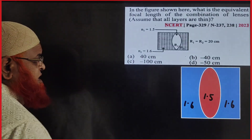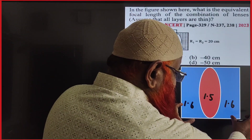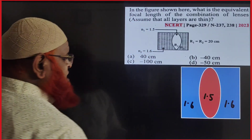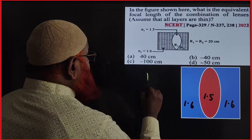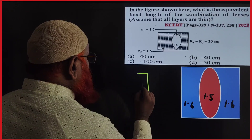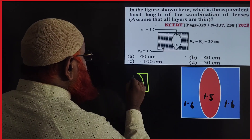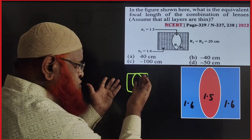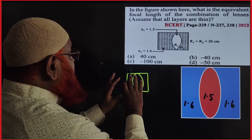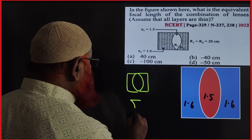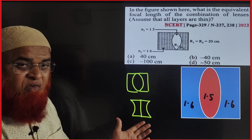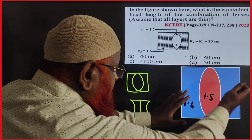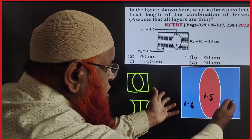Let us look at this carefully. There are two plano-concave lenses and a convex lens in the middle. There is one plano-concave lens on one side and another plano-concave lens on the other side. If I reverse them and join them together, I get a complete concave lens. The two blue-colored plano-concave lenses on either side join together to become a single concave lens.